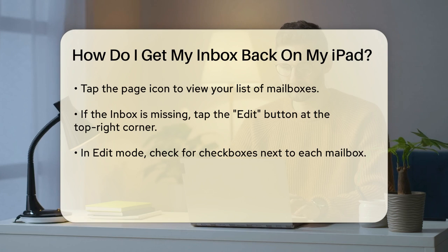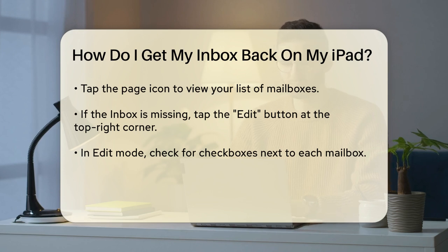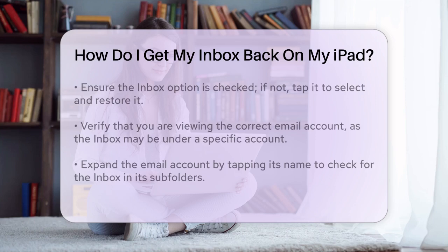In Edit mode, you'll see checkboxes next to each mailbox. Find the Inbox option and make sure it's checked. If it's not highlighted, tap on it to select it. Once you've selected the inbox, it should reappear in your list of mailboxes.